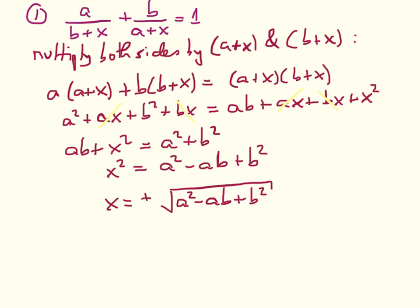Of course we need to say plus or minus, because if we square this to get back to x², it doesn't matter whether we have a plus or minus sign — in both cases squaring gives a² − ab + b² again. So the correct answer is x = ±√(a² − ab + b²). We multiplied both sides by the denominator terms, expanded, cancelled terms, put x's on one side and constants on the other, then took the square root. With that we can go on to the second question.